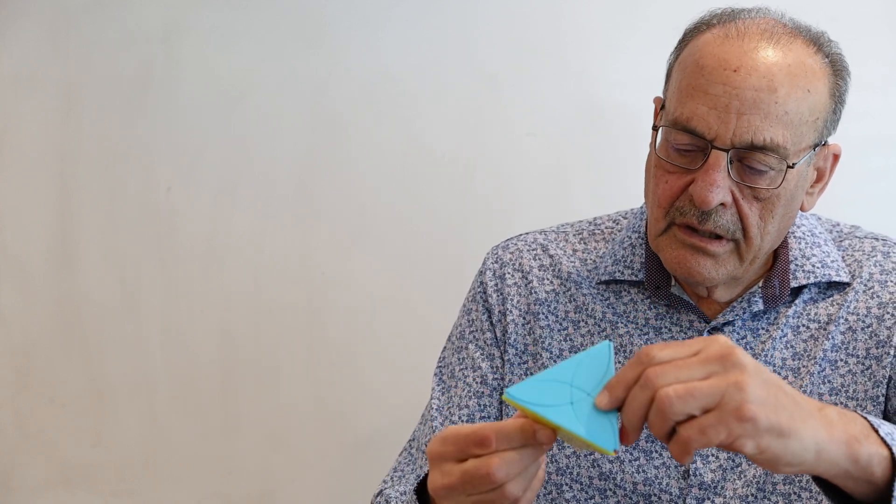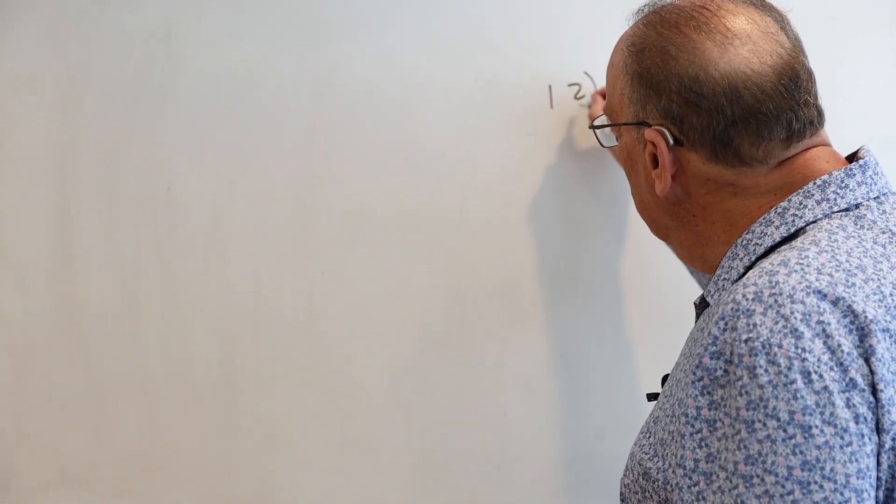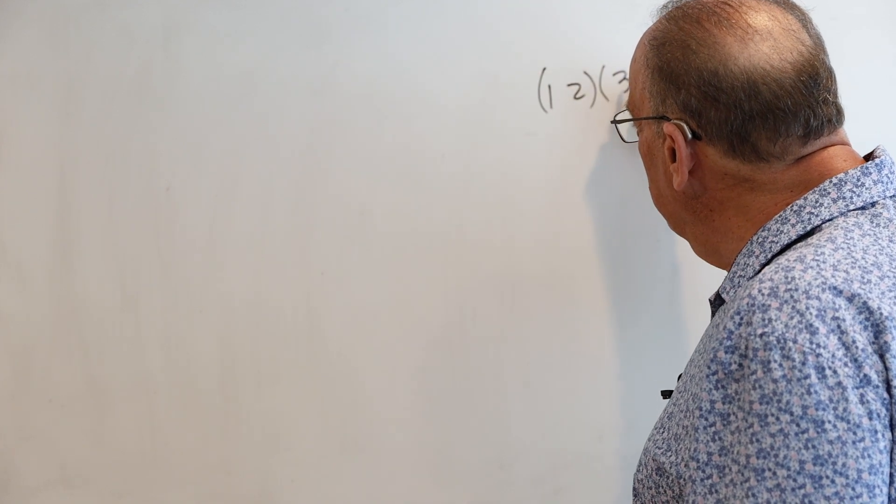Now also, this other third corner and this fourth corner also trade places when I do the same twist. So if I call this corner one and two, and call these corners three and four, mathematicians write that often like this: one and two, three and four.